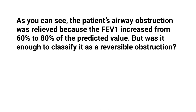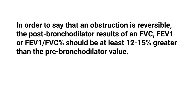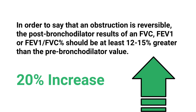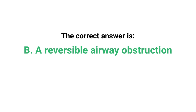The patient's airway obstruction was relieved because the FEV1 increased from 60% to 80% of the predicted value. To classify an obstruction as reversible, the post-bronchodilator result for FVC, FEV1, or the FEV1-to-FVC percentage should be at least 12 to 15 percent greater than the pre-bronchodilator value. In this case there was a 20% increase, which means the FEV1 improved enough to classify this as a reversible airway obstruction.